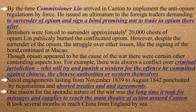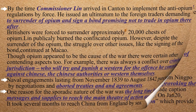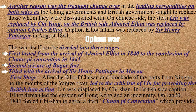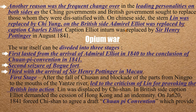One reason for the conflict was a significant communication gap between Britain and China. On the Chinese side, Lin was appointed by the government but had provoked the British. Lin was then replaced by Qi Shan. On the British side, Admiral Elliot — Captain Charles Elliot — was the key figure, later replaced by Sir Henry Pottinger in August 1841. This marked a new stage of the Opium War.